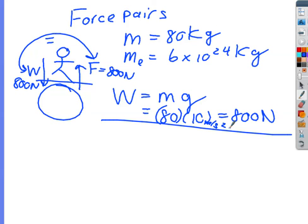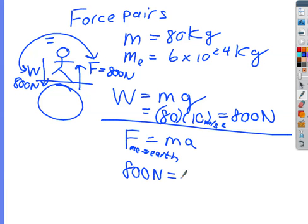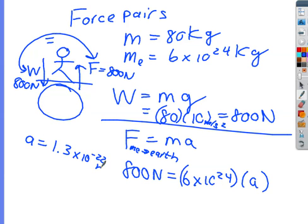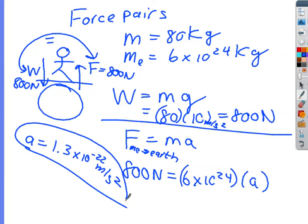So how fast am I accelerating the earth? Well, I do another problem. F equals m times a. This would be the force of me on the earth. So the force I apply is 800 newtons. That is equal to the mass of the earth, 6 times 10 to the 24th, times a. What would be the acceleration that the earth is coming toward me? That would be 800 divided by 6 times 10 to the 24th. And guess what? The acceleration of the earth toward you is only 1.3 times 10 to the negative 22nd meters per second squared. Clearly not that much, but it's still something. It is still there. This is how quickly the earth is accelerating toward you.